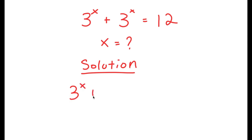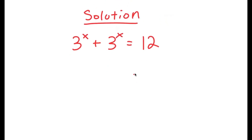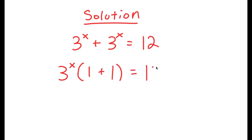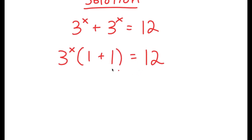I have 3 to the power of x plus 3 to the power of x is equal to 12. What I'm first going to do is factor out 3 to the power of x. So I get 3 to the power of x times 1 plus 1 is equal to 12. Now, 1 plus 1 is 2, so I get 3 to the power of x times 2 is equal to 12.